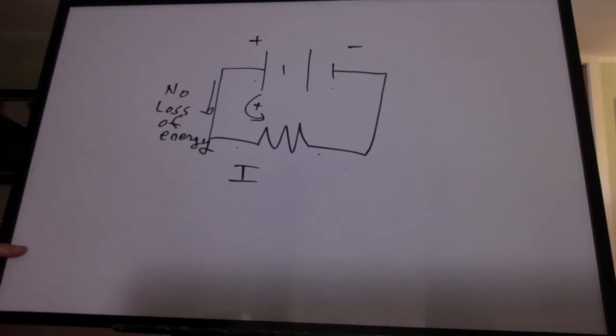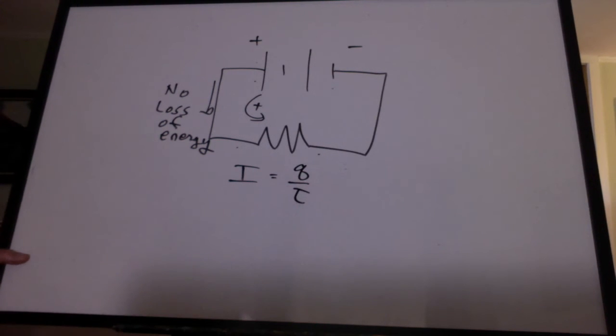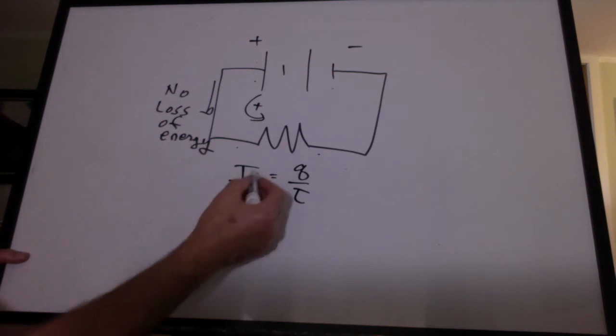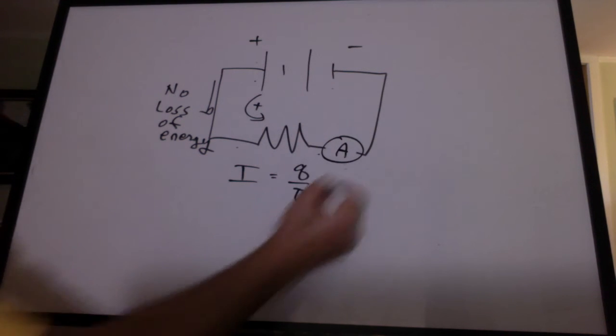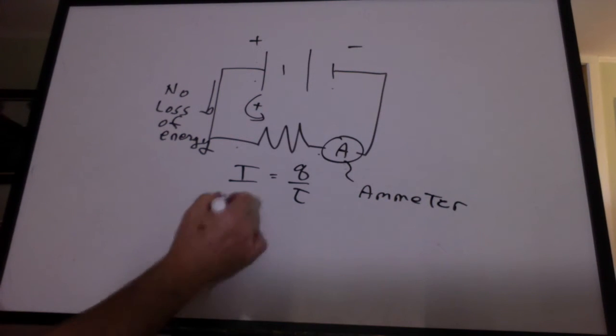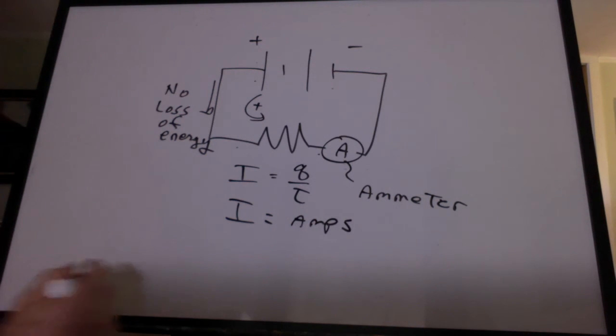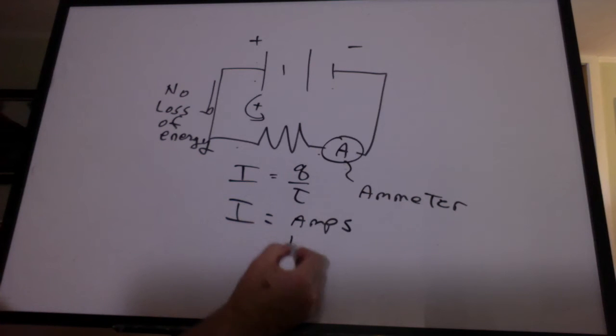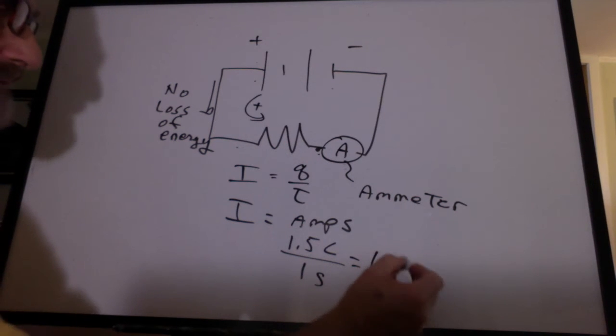Well, we'll talk about current. The symbol for current is I, and it's charge per time. So if we wanted to know how much current was flowing through here, we'd have to put in a meter. That meter is going to be represented by the letter A, and it stands for an ammeter. It measures amps. Current is measured in amps. And if we had, say, for example, 1.5 coulombs of charge flowing through that point here in one second, we would say we have 1.5 amps.